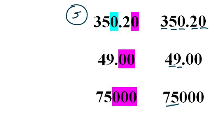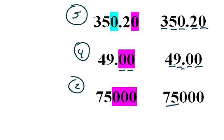These zeros are ending zeros. Ending zeros are significant if there's a decimal point, so that's a 4 significant figure number. These zeros here at the end are also ending zeros, but there's no decimal point, so this is only a 2 significant figure number — only the 7 and the 5 are significant. So we have a 5 significant figure number, a 4 significant figure number, and a 2 significant figure number.